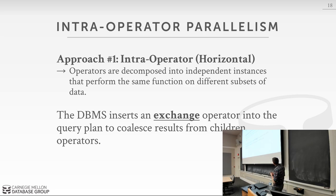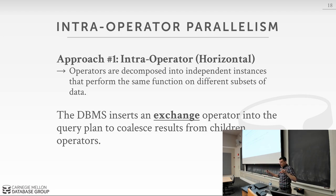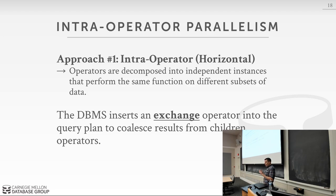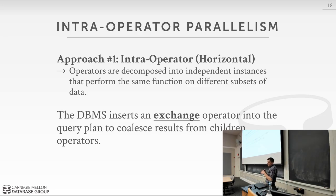Intraoperator parallelism is also called horizontal parallelism. For a single logical operator in a query plan — like scanning table A — we instantiate multiple instances of that operator and execute them in parallel. We introduce a new type of operator called the exchange operator, which acts as a barrier checking whether all subtasks for that operator have completed. Once all subtasks complete, it passes results to the next operator in the query plan. The exchange operator was introduced in the late 1980s to early 1990s in the same paper that introduced the volcano or iterator model, and most parallel databases have something like this.